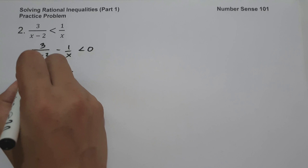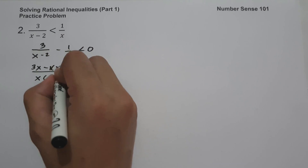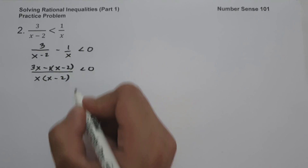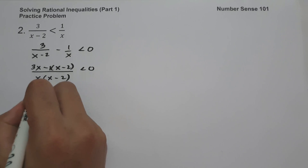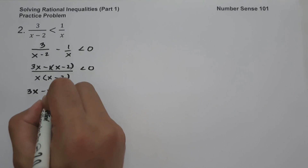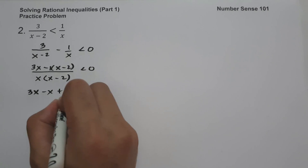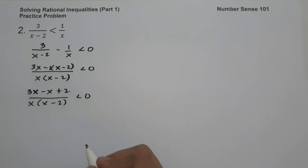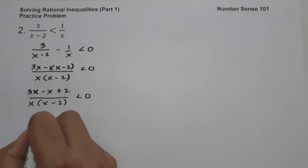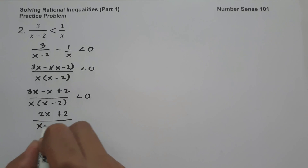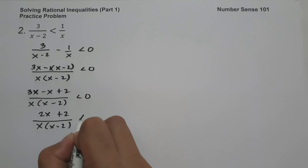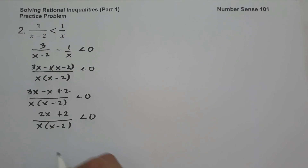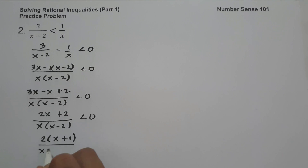Using cross multiplication: 3 times x is 3x, and negative 1 times x minus 2 gives negative x plus 2. So the numerator is 3x minus x plus 2, which is 2x plus 2, all over x times x minus 2 less than 0. We can factor the numerator as 2 times x plus 1, all over x times x minus 2 less than 0.